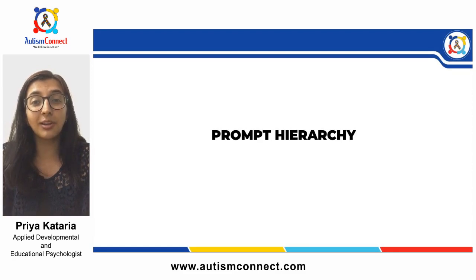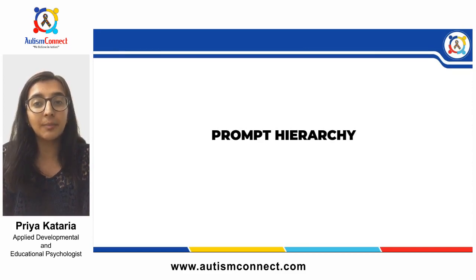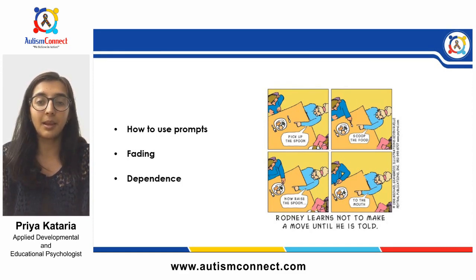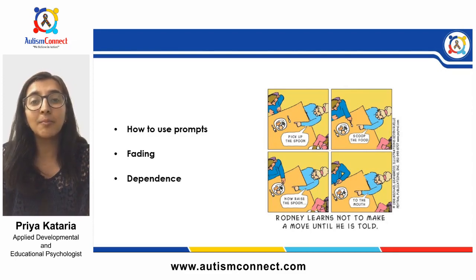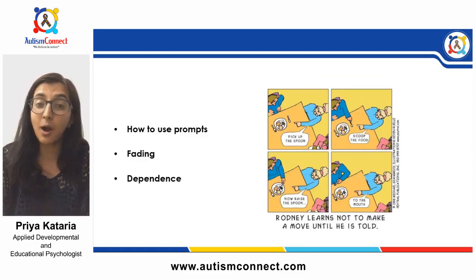Remember, unless a prompt is part of the teaching procedure, we want to be very careful not to reinforce responses that needed prompting. Prompting can be so subtle that the child learns to be in tune with our facial gestures. For example, if the current target for John is to select a red car independently and he needs you to point to the red item, don't provide reinforcement — you can prompt so that he learns the correct response and then come back to it another time. It is very important to be able to fade prompts appropriately because we want to foster independence.